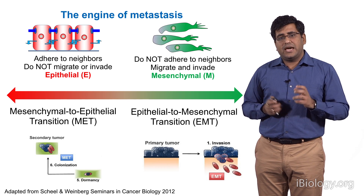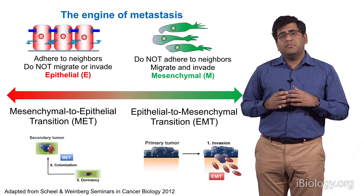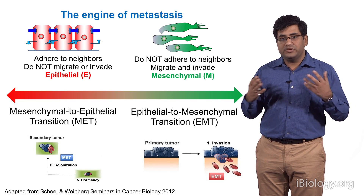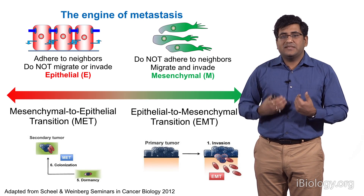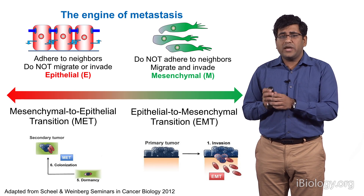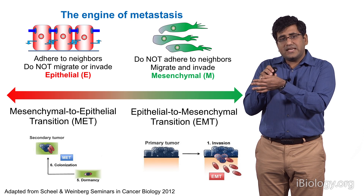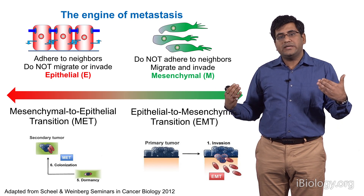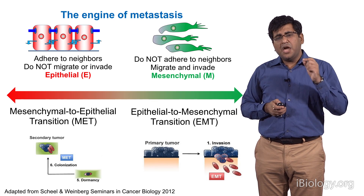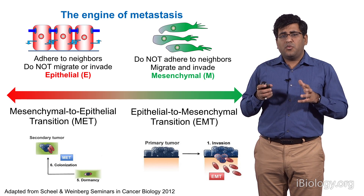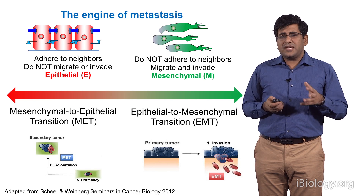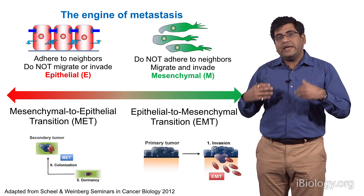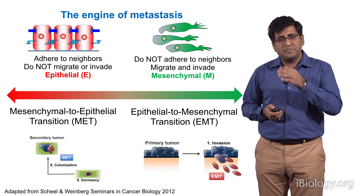EMT and MET are not processes invented by cancer — these are normal physiological processes that happen during embryonic development and even wound healing, co-opted by cancer to metastasize. When you get a wound on your skin, cells move together and close the wound, then stop moving and settle down — exactly what EMT and MET describe. But those cells typically move collectively, which is not really epithelial and not really mesenchymal. So is there a stable state somewhere in between, where cells can both adhere and migrate — which can close wounds and, in the case of cancer, form clusters? Is there a stable hybrid state?